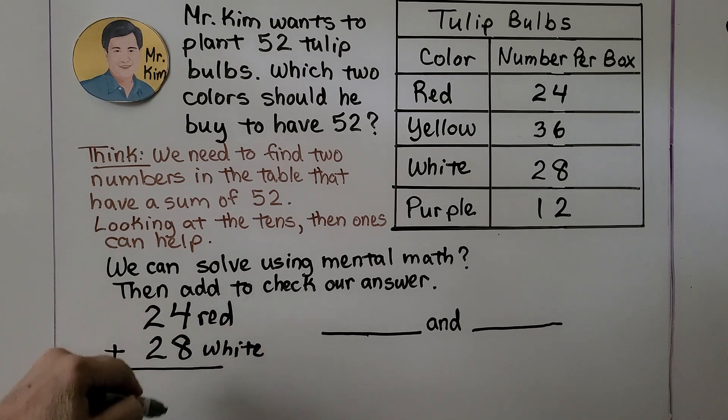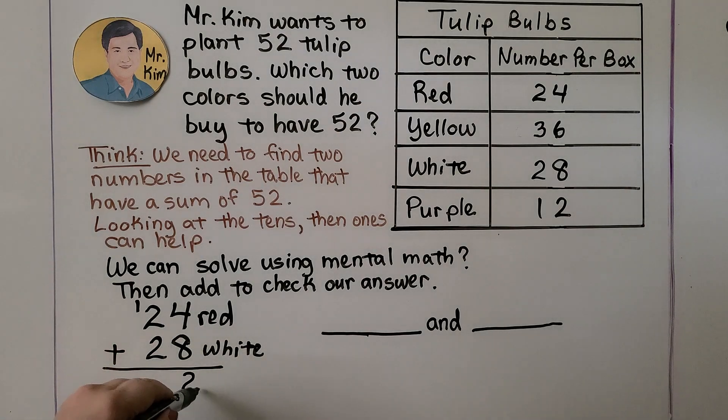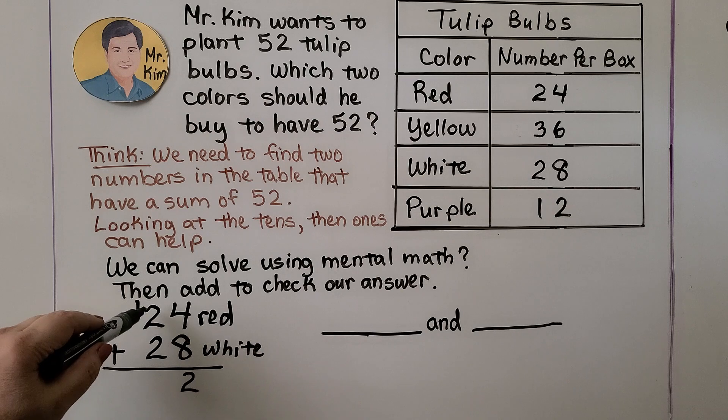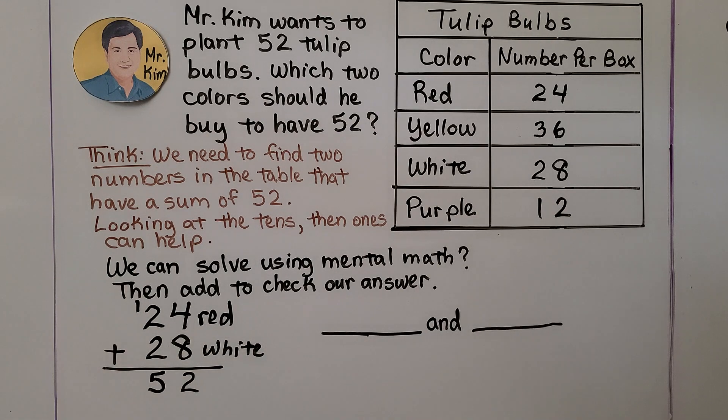We add the ones place first. Four plus eight is 12. We regroup the one. Put the two down. And then we add the tens: two, four, five. It is 52.